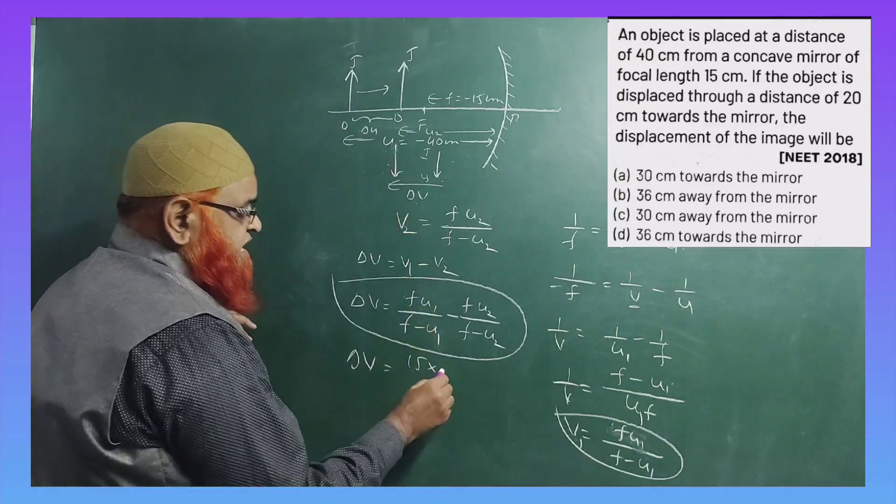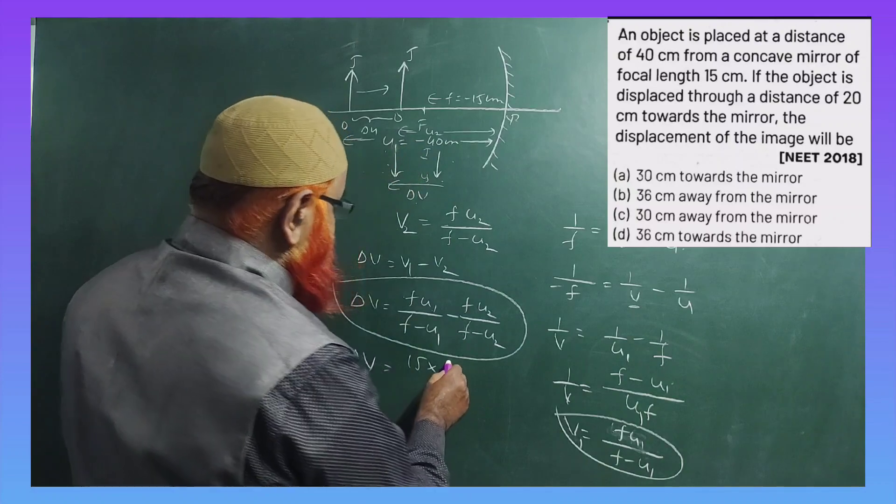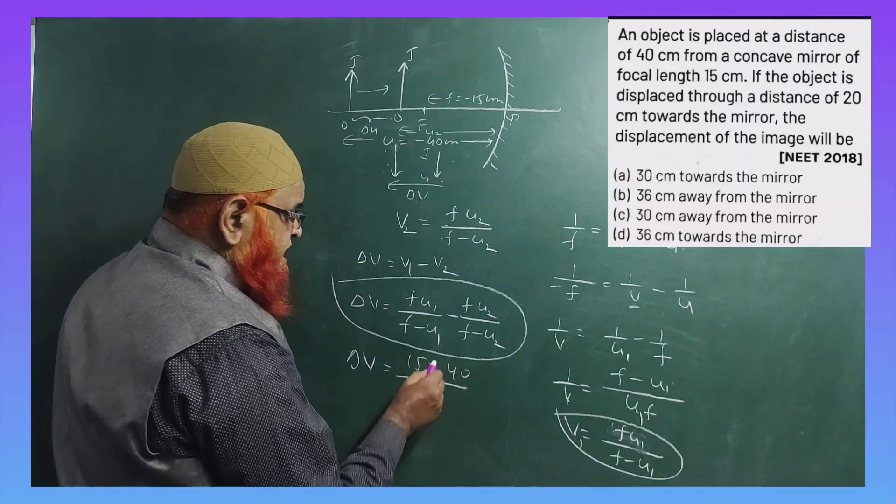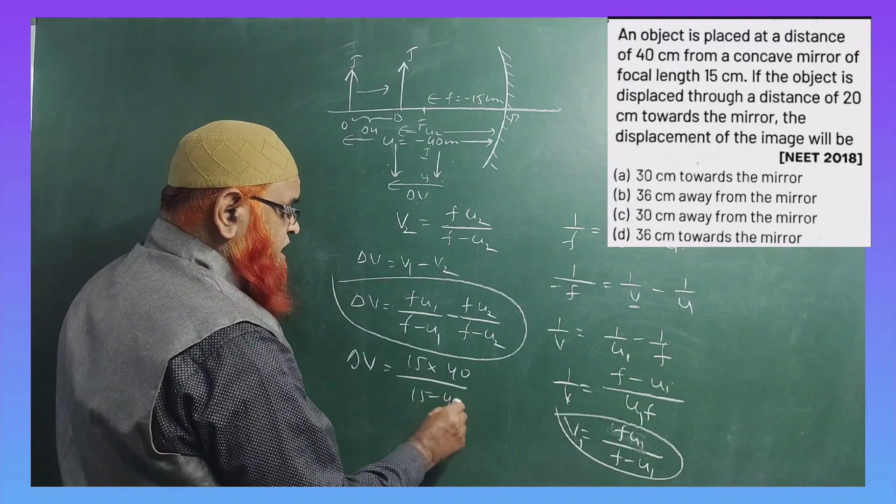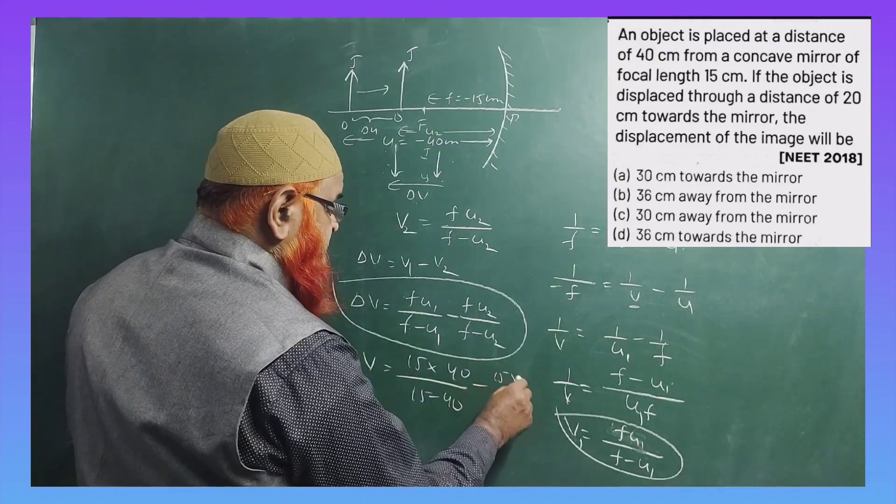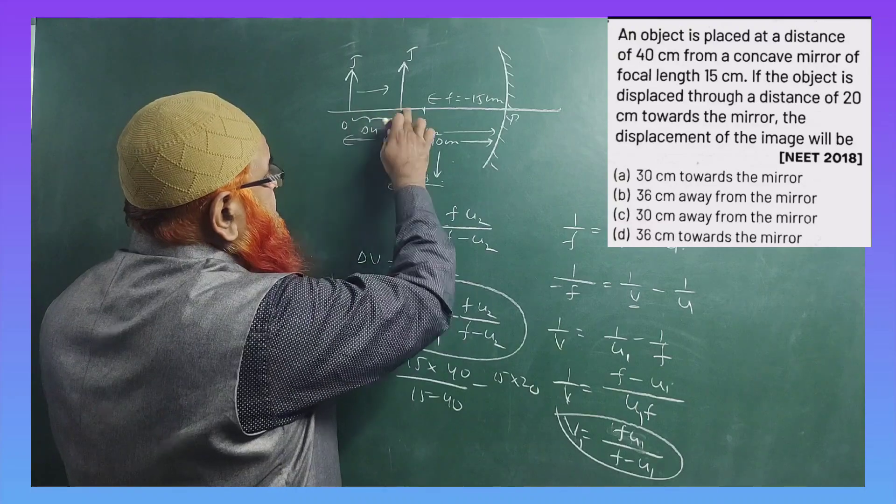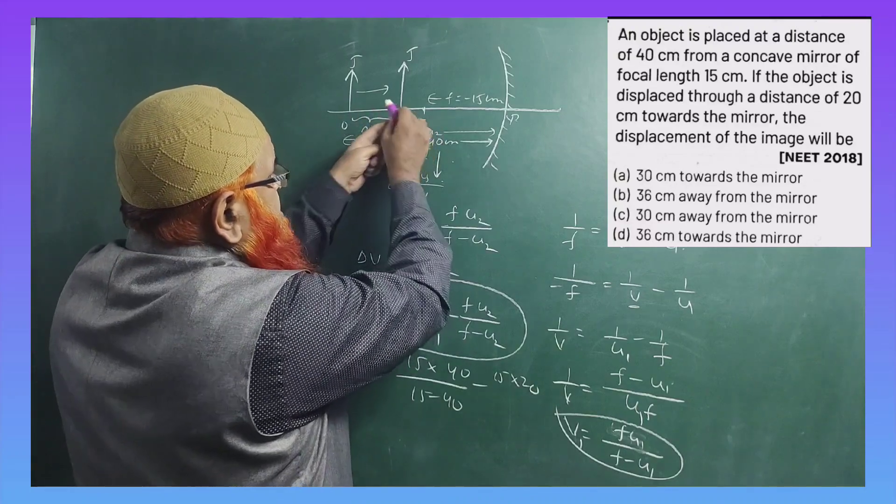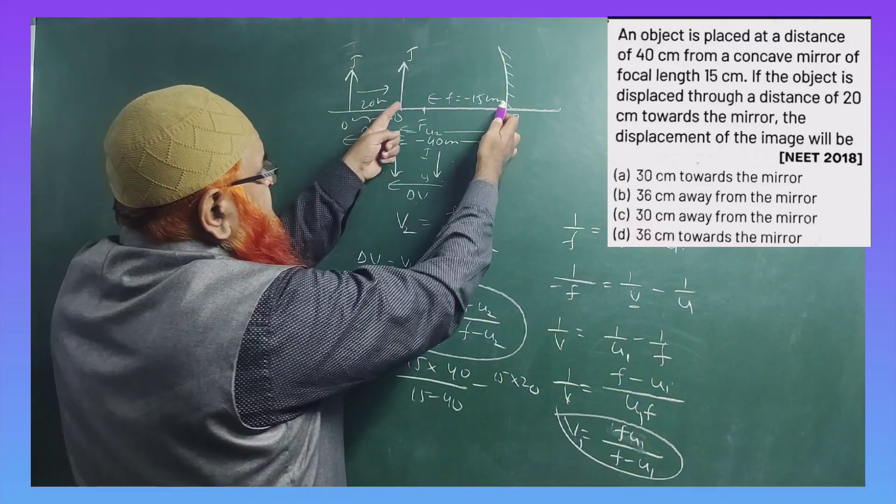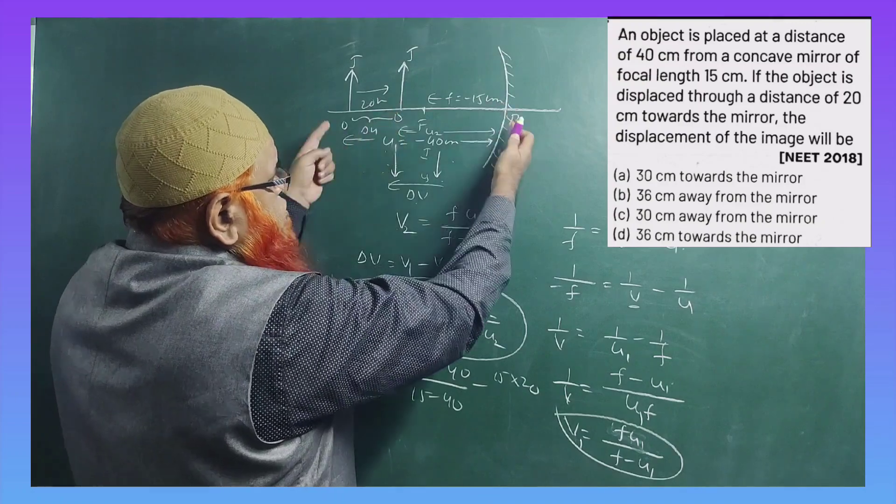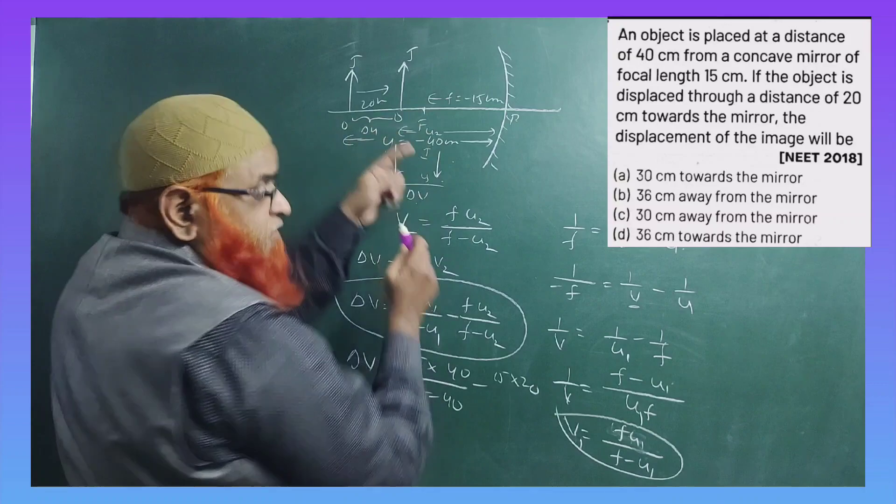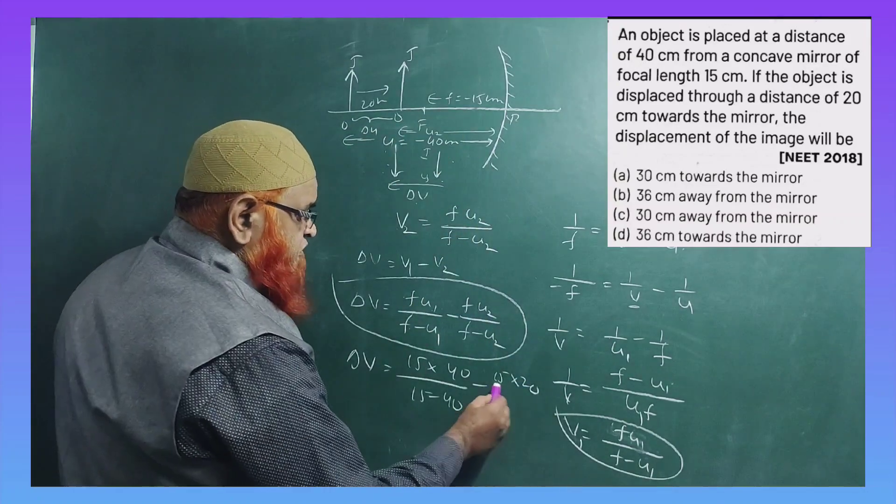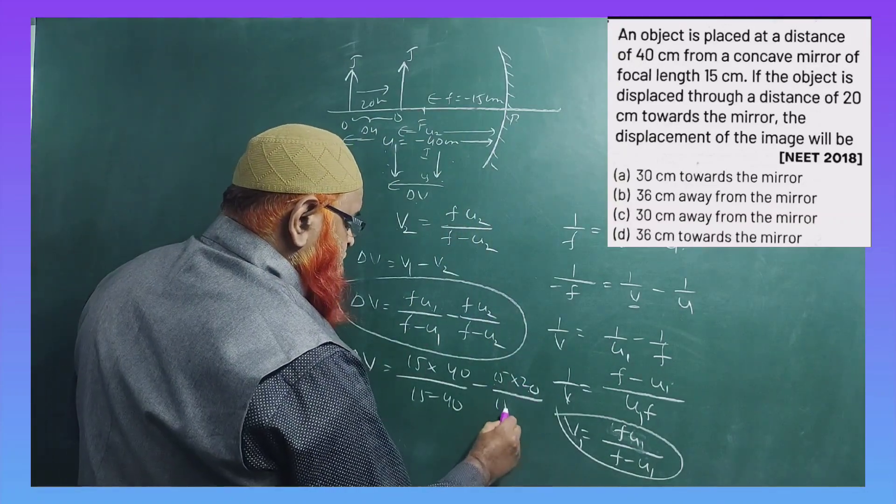15 into u1. u1 is taken as 40, so 15 into 40 divided by 15 minus 40, minus 15 into 20. Because you will shift 20 centimeters towards this side, that means the remaining is 20 centimeters. Because totally it is 40, so if you shift 20, the object distance after shifting will be remaining 20. So you can write 15 into 20 by 15 minus 20.